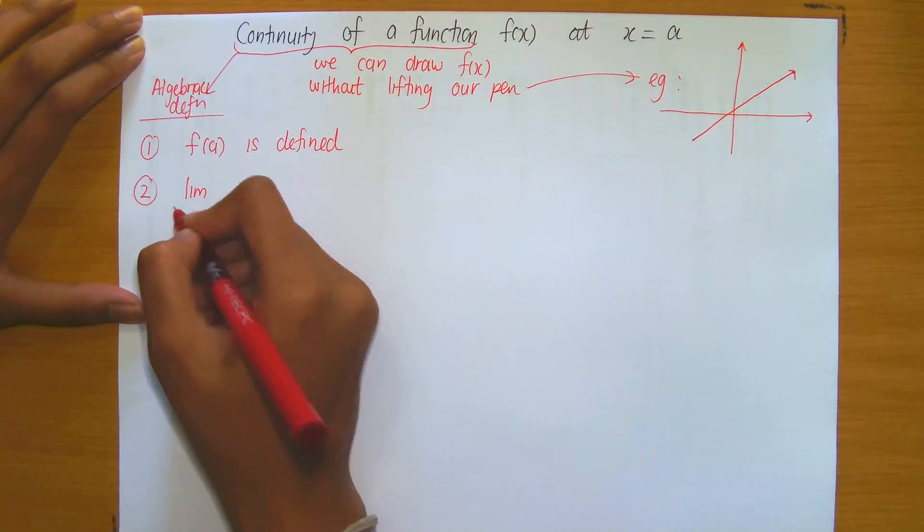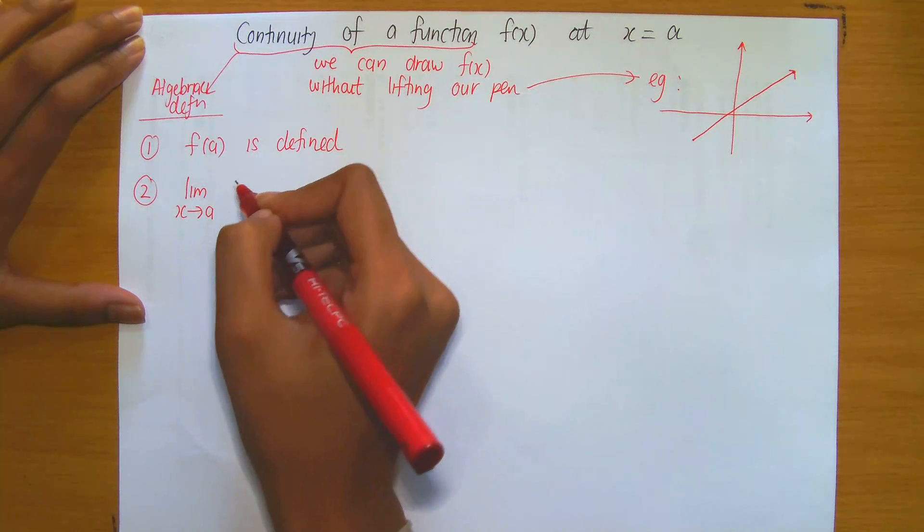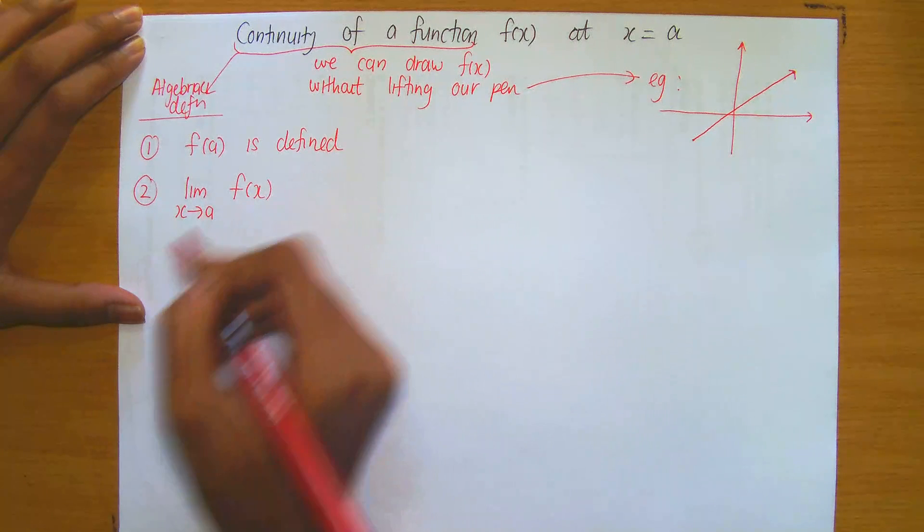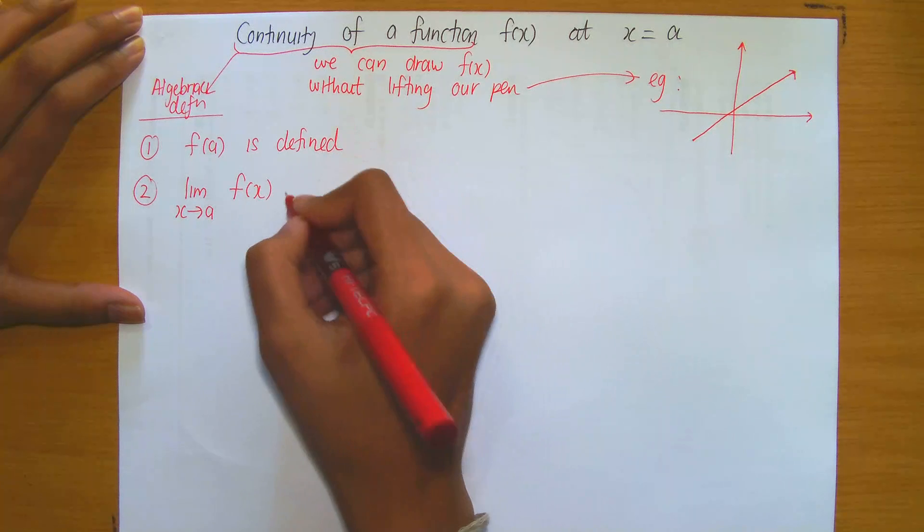The second condition is that the limit of f(x) as x approaches a exists.